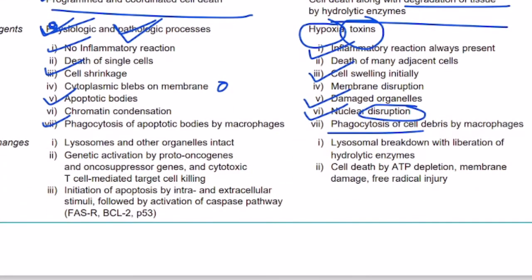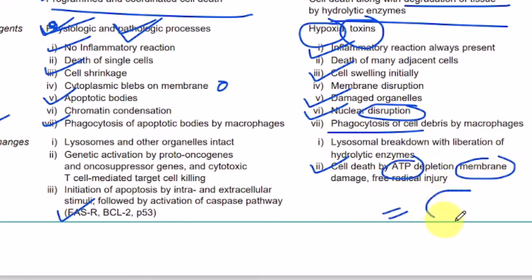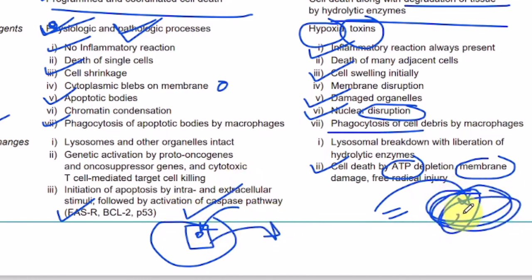The molecular changes in apoptosis are at the genetic level — an imbalance between apoptotic and anti-apoptotic genes. In necrosis, it mainly occurs because oxygen is not supplied. A helpful analogy: necrosis is like a bomb being thrown onto a society where all houses and people are destroyed — a mass murder. Apoptosis is like one person in a particular house committing suicide, and then police come and take the body away. That is the difference between apoptosis and necrosis.